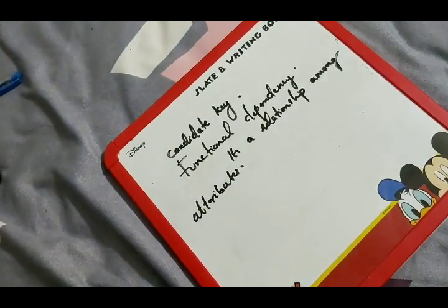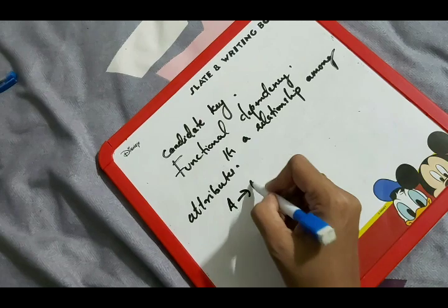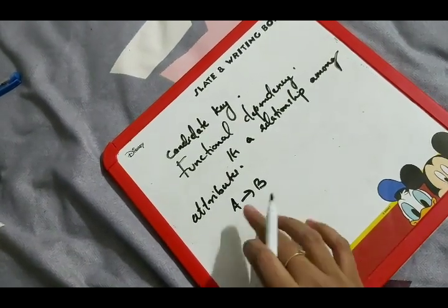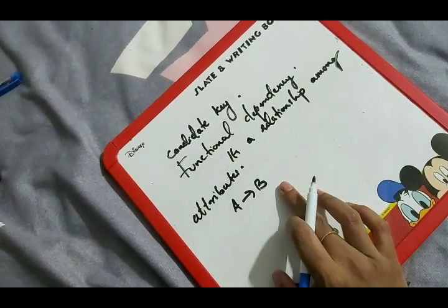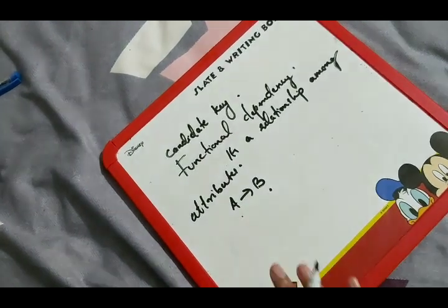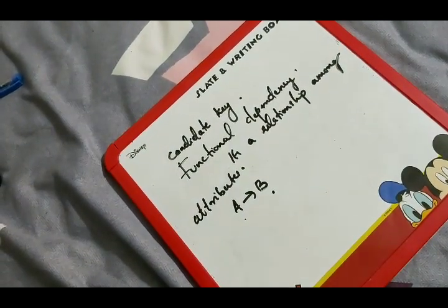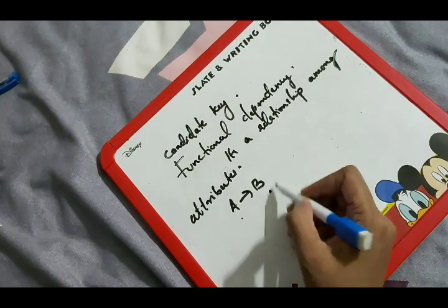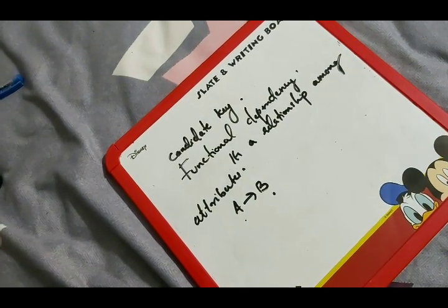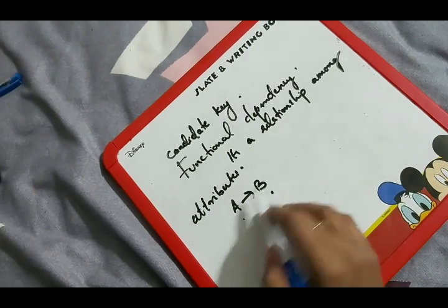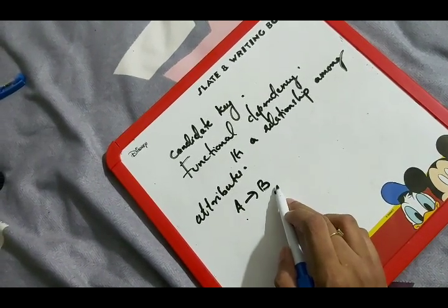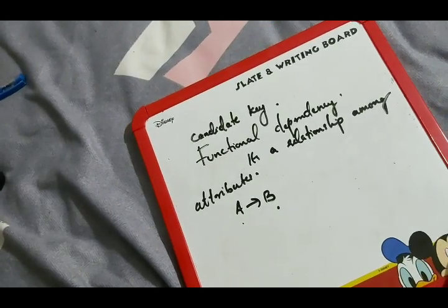If A determines B, then it means B is uniquely determined by A. That is, if A and B are two attributes in our table, B is uniquely determined by A. This is what we call functional dependency — a relationship among attributes.